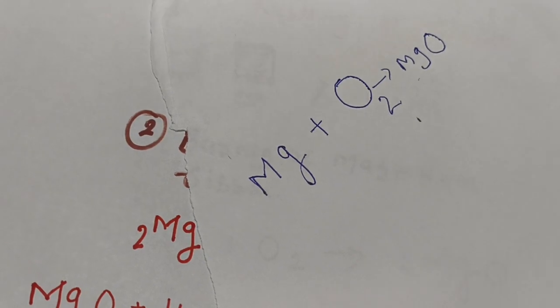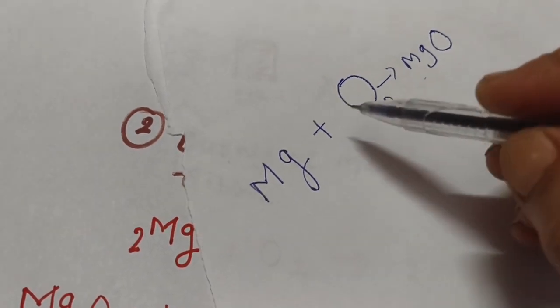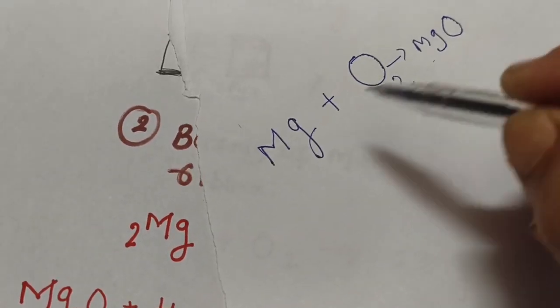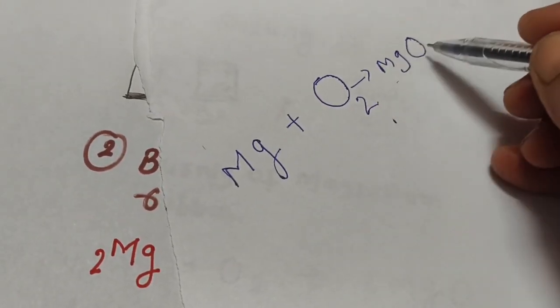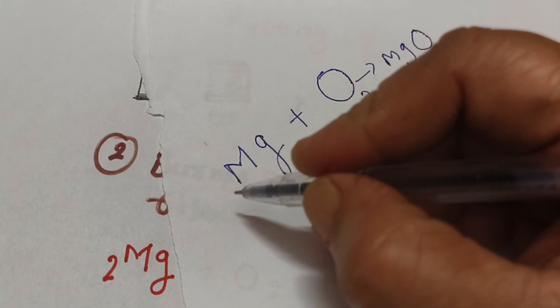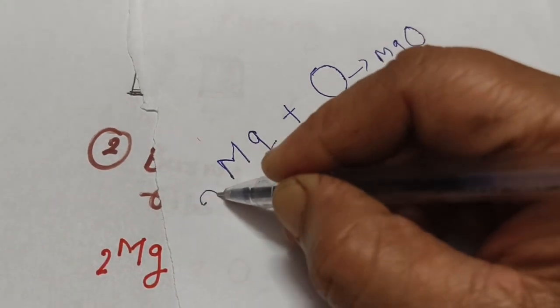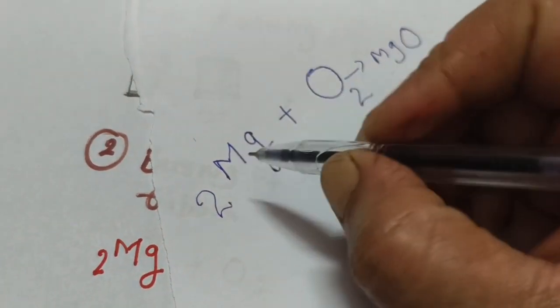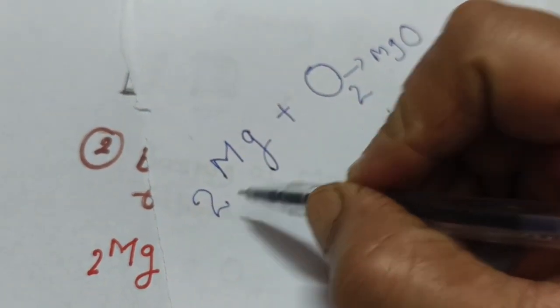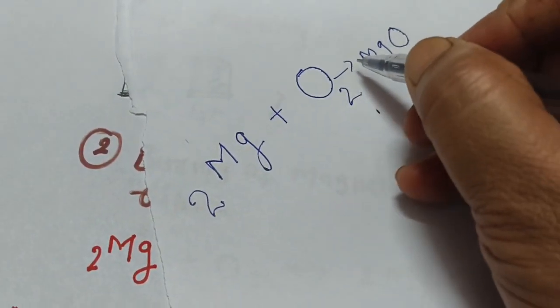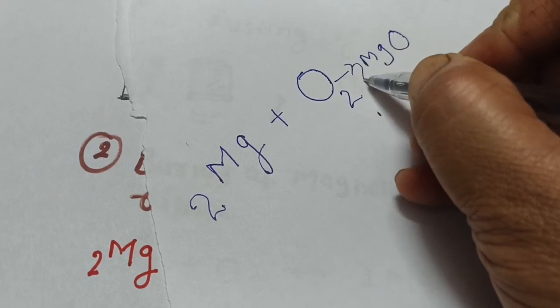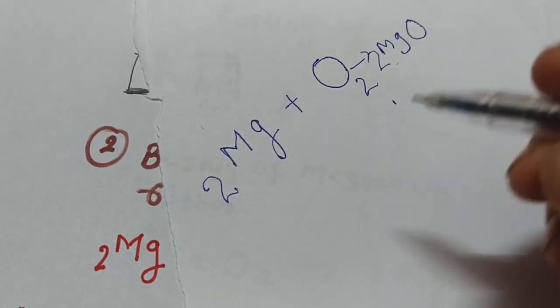How do we balance this reaction? We have two oxygen atoms and one magnesium. For MgO, we need to place a coefficient of 2, making it 2MgO. So the balanced reaction is: 2Mg + O2 → 2MgO. The reaction is now balanced.